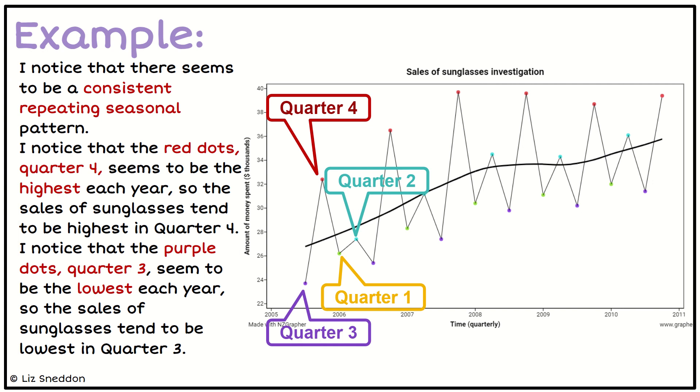Then we want to find the lowest. So in a one year period, what would the lowest point be? And it seems to be the purple is the one that's the lowest. So that's our quarter three. So writing that in context, the sales of sunglasses tend to be lowest in quarter three.